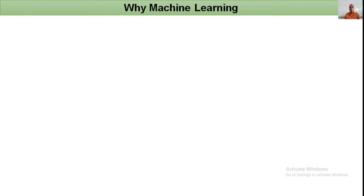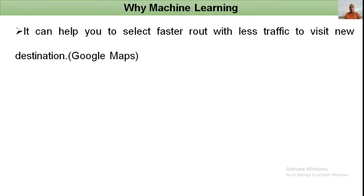Why is machine learning important? One application is route optimization. It can help you select a faster route with less traffic to a new destination. Using Google Maps, you can search for the nearest route or a route with less traffic, saving time and money. Furthermore, if you know a fifth route not in the map, machine learning learns from your feedback and adds that route for future searches.